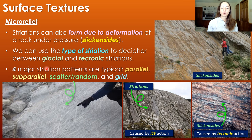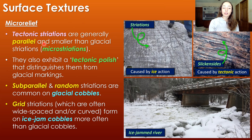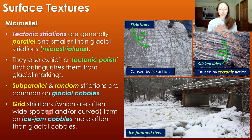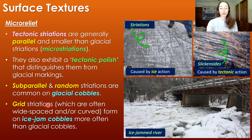Four major types of striation patterns are typical: parallel, subparallel, scattered or random, and grid striations. Tectonically formed striations are typically parallel and more micro than glacial striations, and they typically exhibit a tectonic polish — a shiny surface on the slickensides that distinguishes them from glacial markings. Subparallel and randomly oriented striations are more typical of glacial cobbles, while grid striations are more associated with ice jam cobbles — still ice action, but ice jam rather than glacial flow — and are often widely spaced and/or curved.